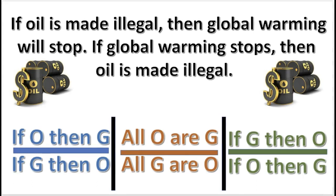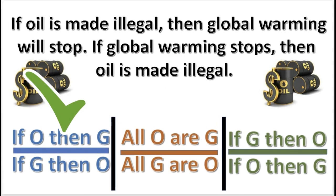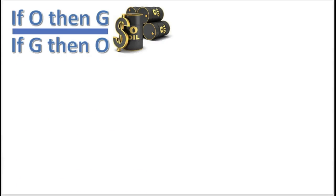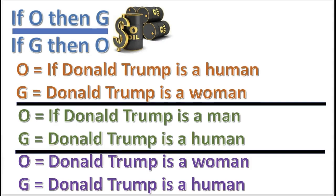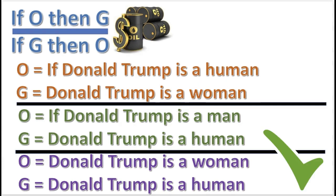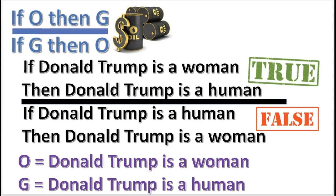Here is another practice problem. What is the form of this argument? O and G represent whole statements. Now, what set of substitutions proves that this form is invalid? When we substitute the terms, we get this argument, which makes the premise true and the conclusion false — because if Donald Trump was a woman, then the premise would be true but the conclusion would be false. The antecedent is true and the consequent is false.